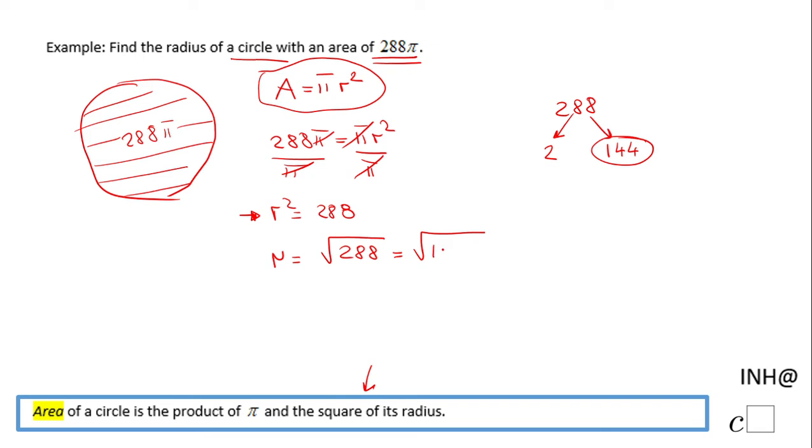So 288 is 144 times 2, and I can use the radical rules. This is square root of 144 times square root of 2, and finally square root of 144 is 12 square root of 2. So the radius of this circle is 12√2.